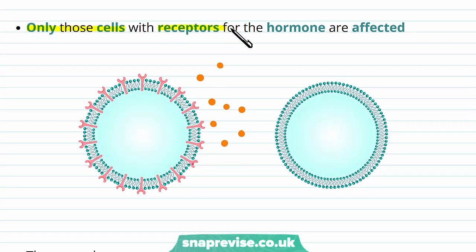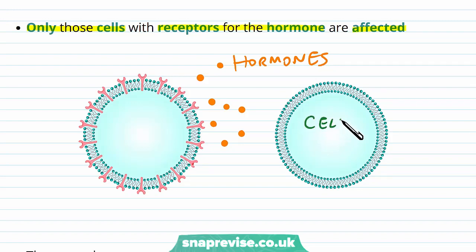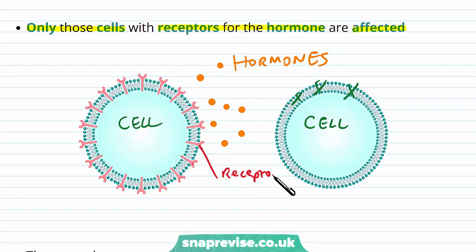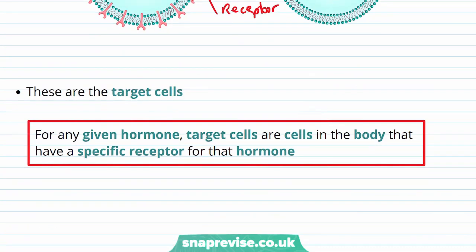It's only cells with the receptors for the hormone which get affected. The hormones are exposed to every cell in the whole body, but if a cell does not have any receptors in its membrane, the hormones don't exert any response from that cell. When a hormone comes across a cell that does have receptors in its membrane for that specific hormone, it can bind to the receptor and carry out particular responses. These cells with the right receptors are known as target cells — the cells in the body which have a specific receptor for that hormone.